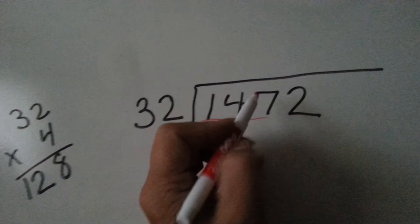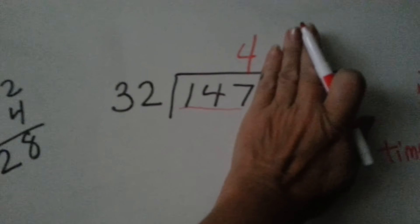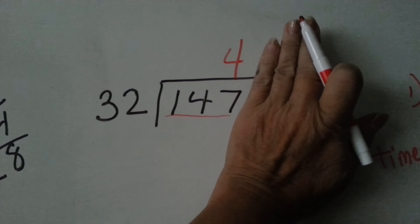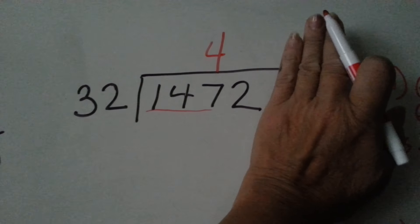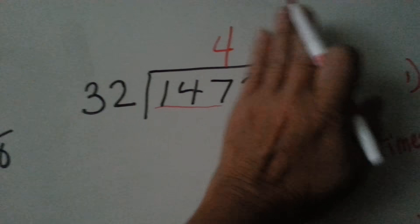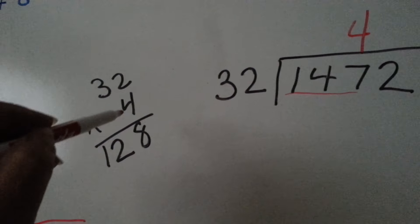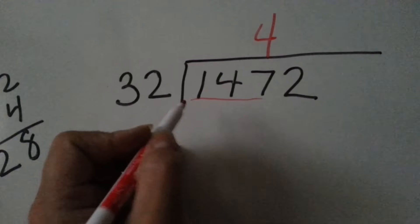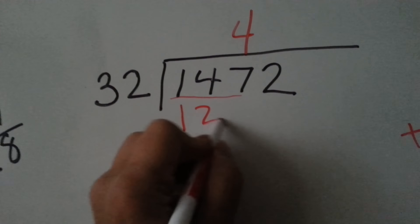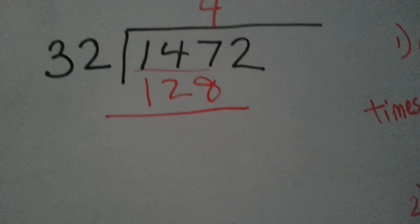We're going to say 32 times 4 and we're going to write the 4 above the 7, because that's what we're putting it into. We're not putting it into 14, we're not putting it into 1472, we're putting it into 147. Now we do our multiplication: 32 times 4. 4 times 2 is 8, 4 times 3 is 12. We have 128 and we write that here.